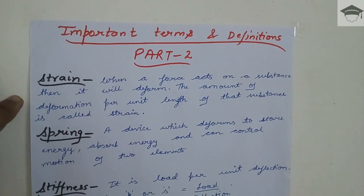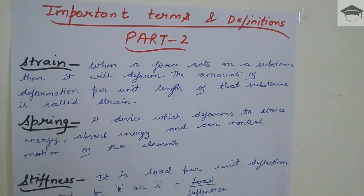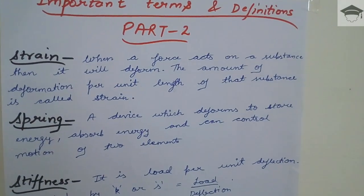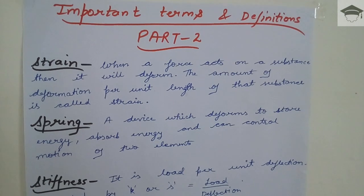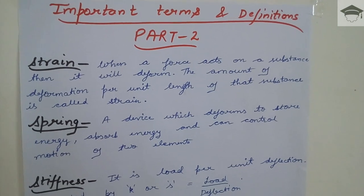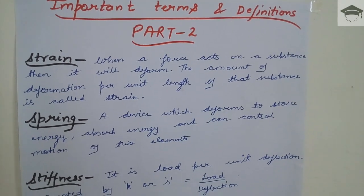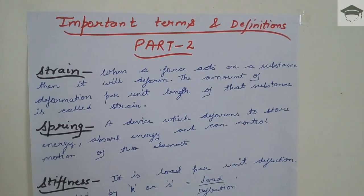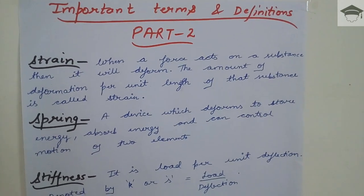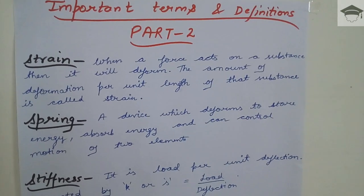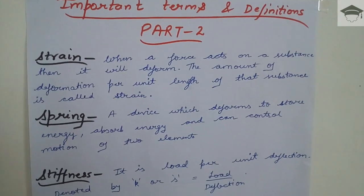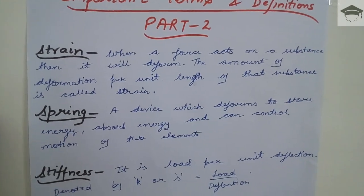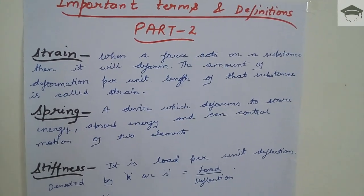Now, strain — this is the sixth term. The definition is: when a force acts on a substance and it deforms, the amount of deformation per unit length of that substance is called strain. Strain has no unit.